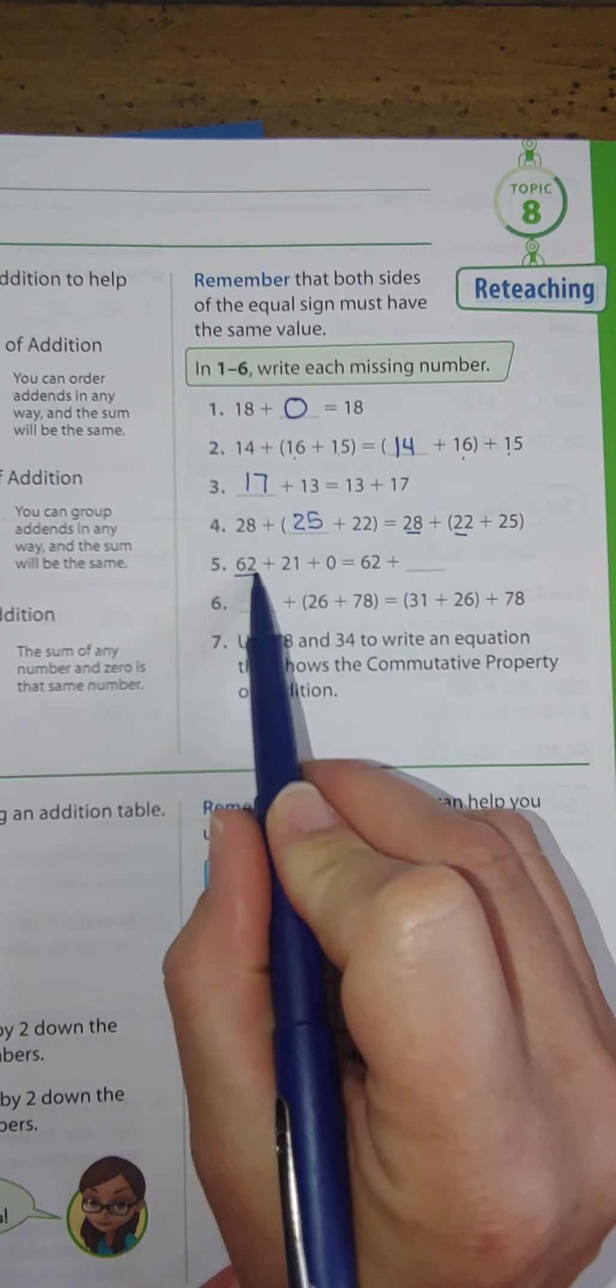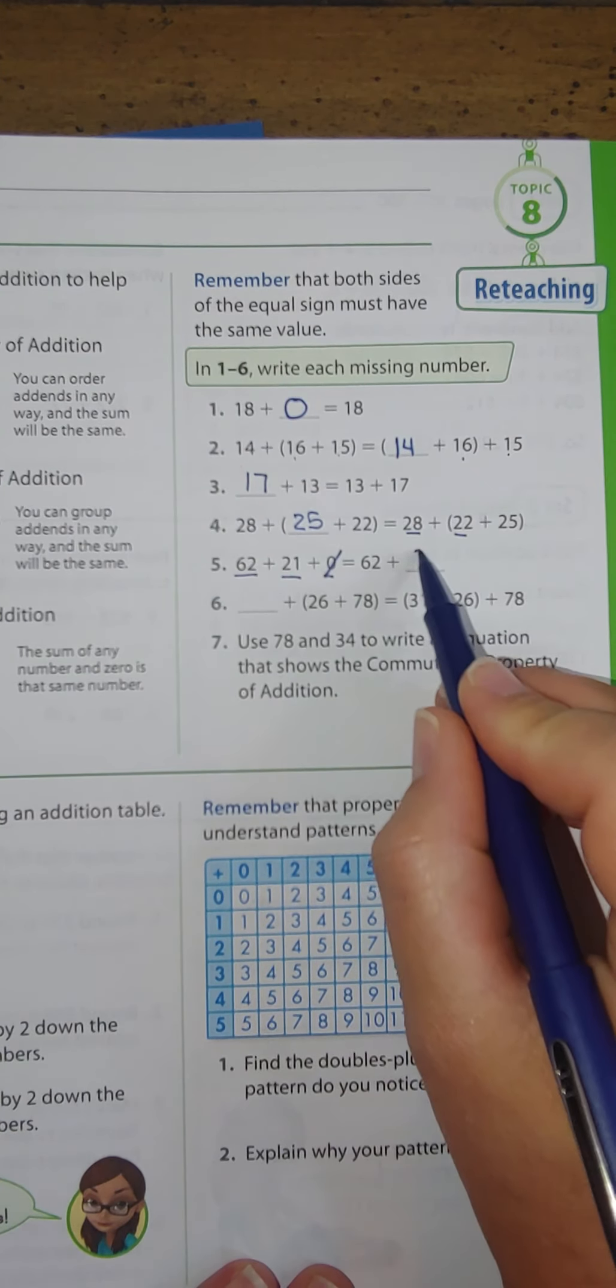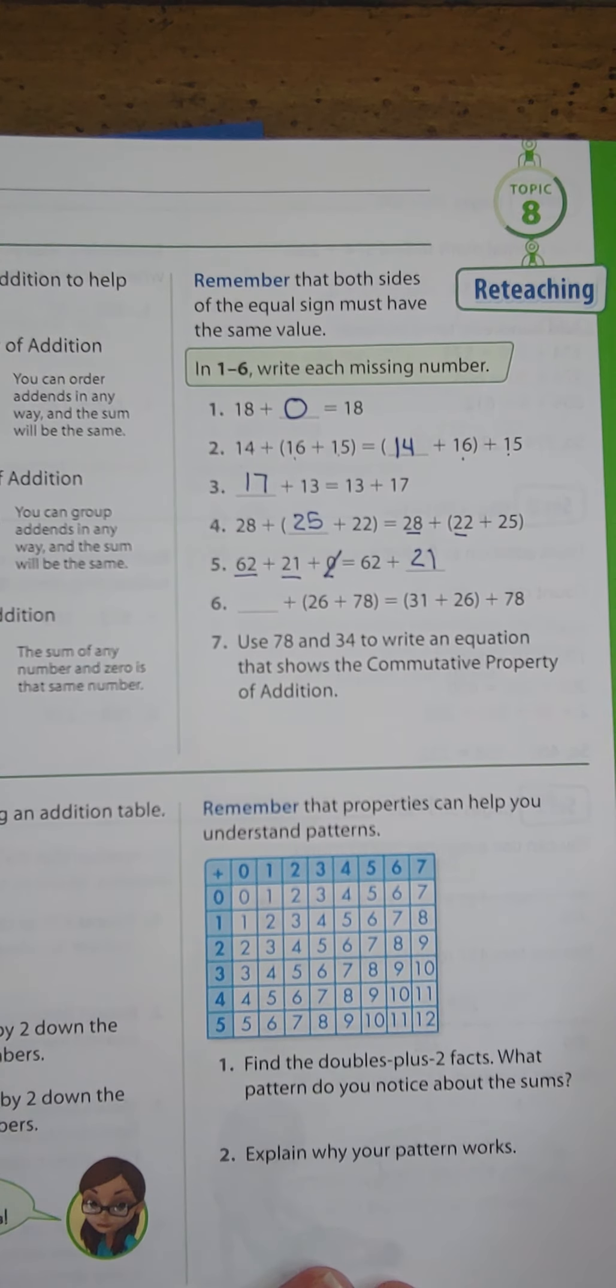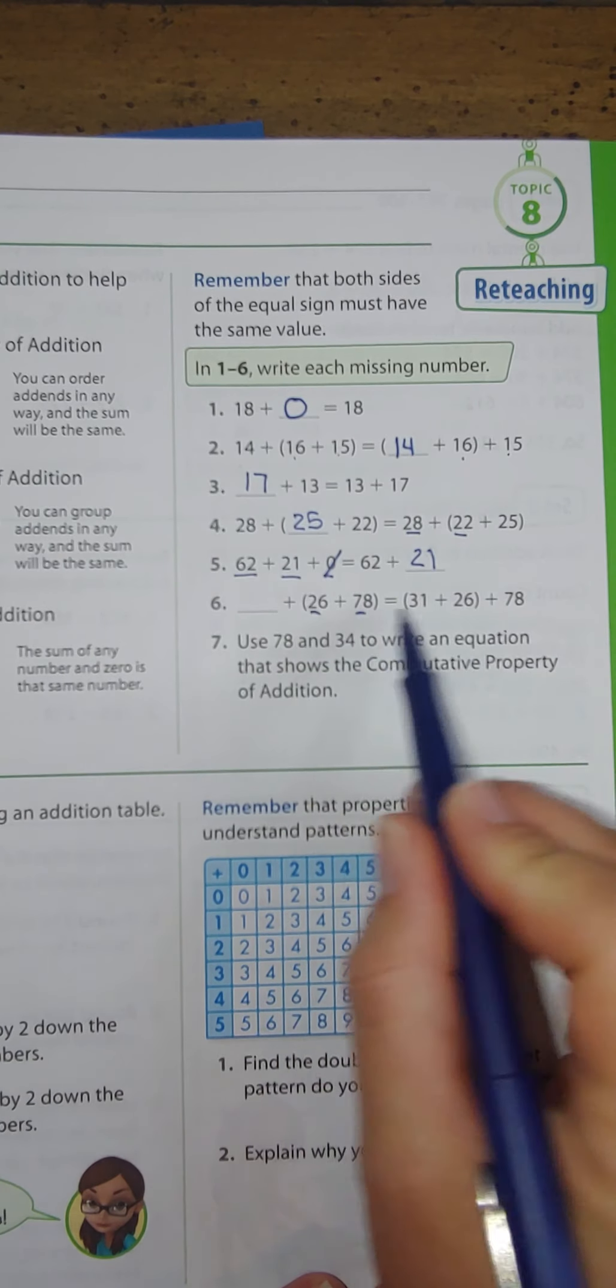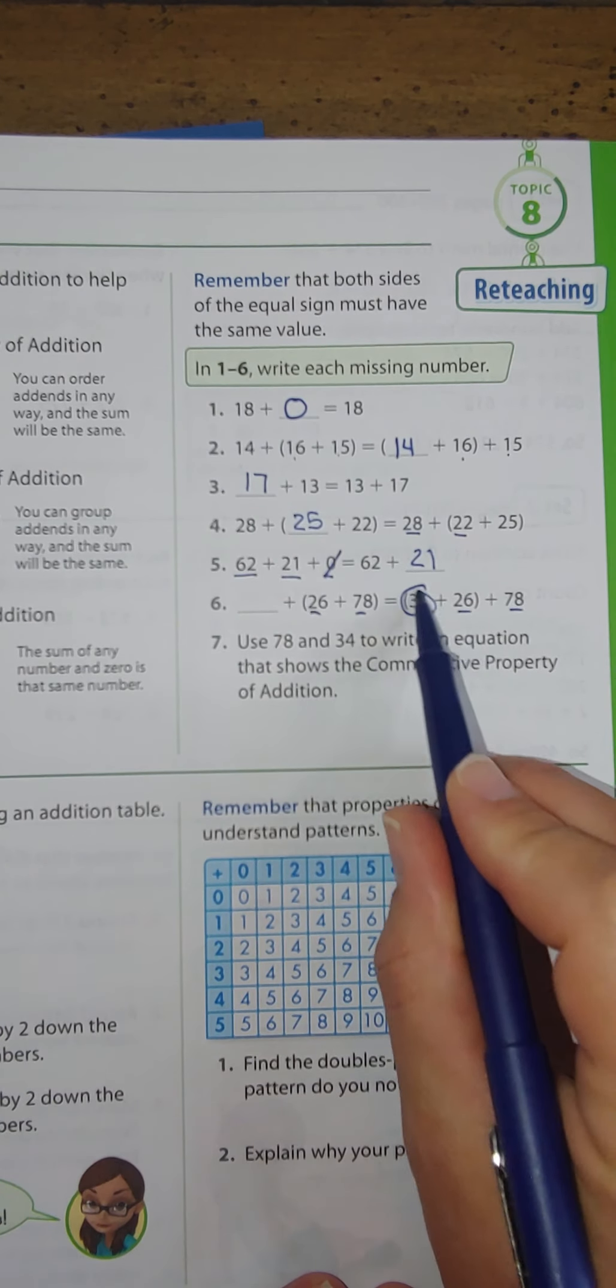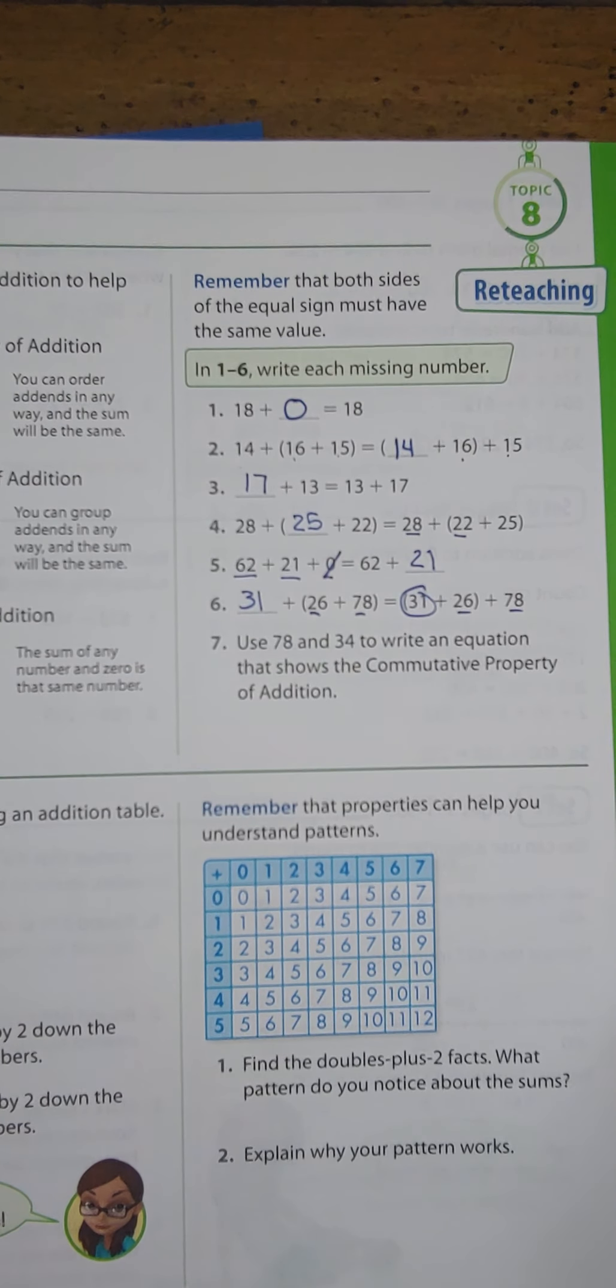For the next problem, I see 62 plus 21 plus zero. Well, I'm going to get rid of that zero. I don't need that there. And so my only missing addend is 21. And for number six, I see 26 and 78. And here is my other addend of 31. This is representing the associative property.